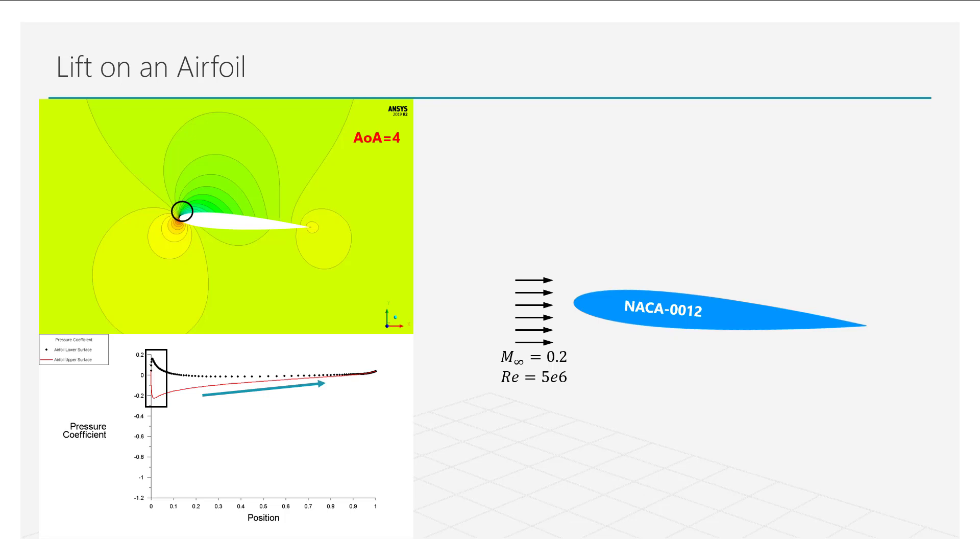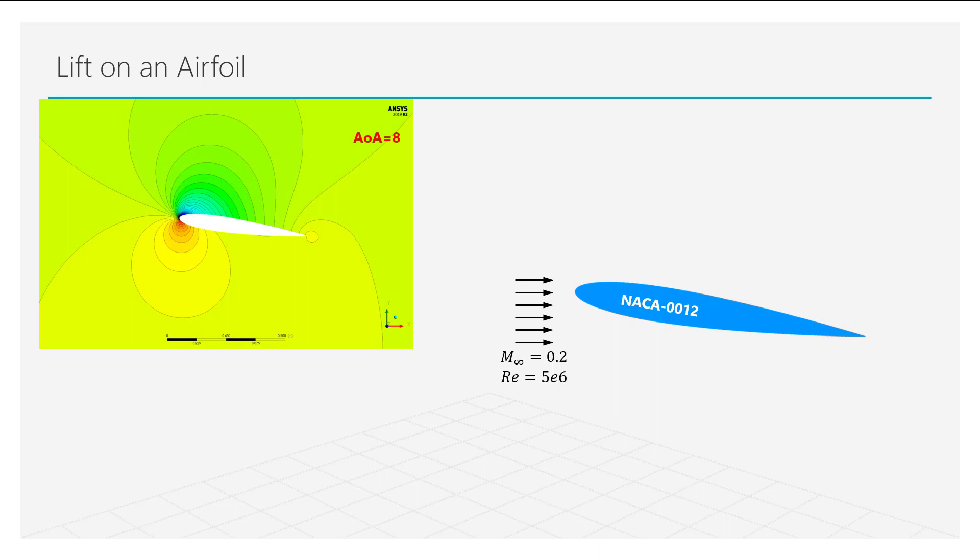As we go further downstream along the surface of the airfoil, the pressure recovers and is equal to the free stream pressure. If we now further increase the angle of attack, we will notice that the positive peak on the lower side of the airfoil remains roughly similar in strength, but the strength of the negative peak on the upper surface increases dramatically. As a result, the lift force generated by the airfoil is also increased.